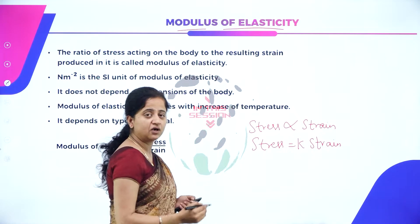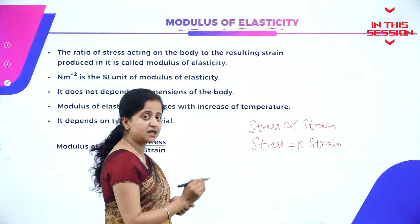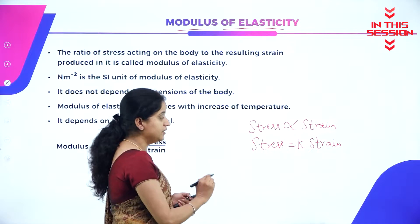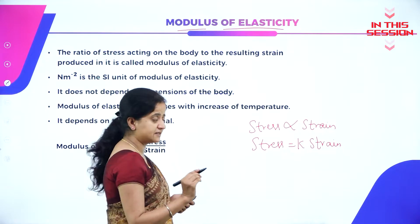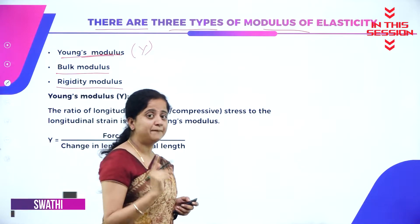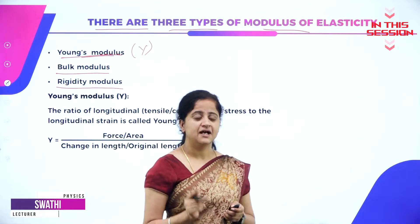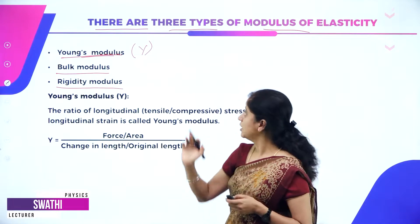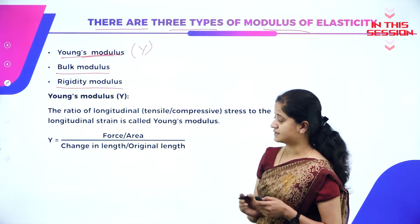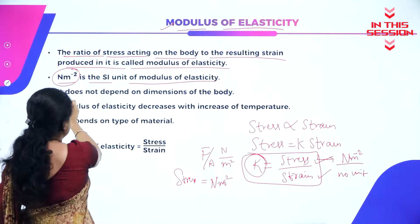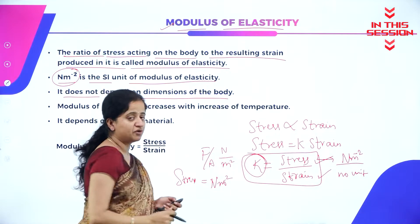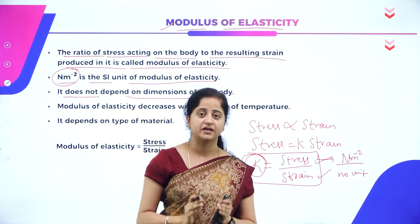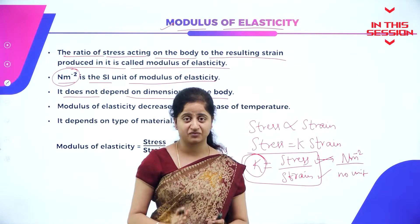K is called the proportionality constant or modulus of elasticity. Young's modulus, bulk modulus, and rigidity modulus are the three types of modulus of elasticity. Modulus of elasticity does not depend on any dimensions of the body.